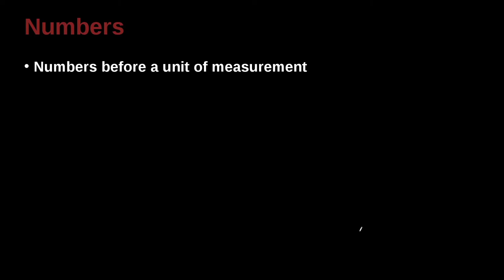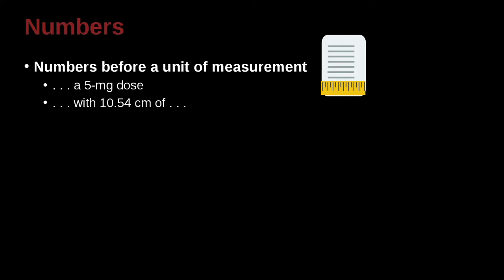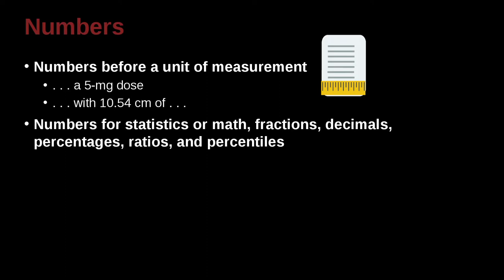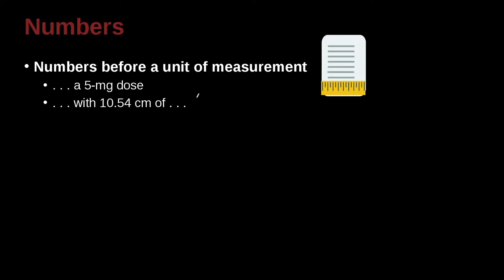Numbers that come before a measurement unit, for example 5 milligrams, 10.54 centimeters. Even though, well in this case 10 is bigger than, is 10 or bigger. But even if this number were smaller, even if this number were 0.5, you should write the number that way. 5.54, which is definitely smaller than 10, you would still write it with a number like this because it's a measurement.